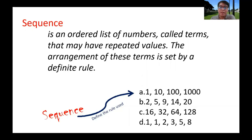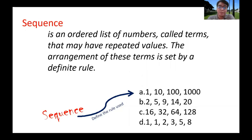The next sequence is 16, 32, 64, 128. Sixteen times 2 is 32, 32 times 2 is 64, 64 times 2 is 128. So the pattern is the previous value times 2.